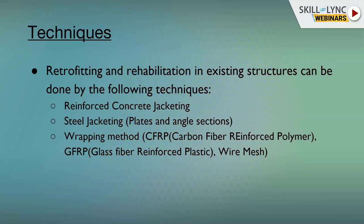To summarize the three techniques: RC jacketing, steel jacketing using plates and angle sections, and the wrapping method using carbon fiber reinforced polymer, glass fiber reinforced polymer, or wire mesh. Wire mesh is used only for masonry structures — if a masonry wall has cracks, we fill the cracks and spread wire mesh before doing the jacketing process.